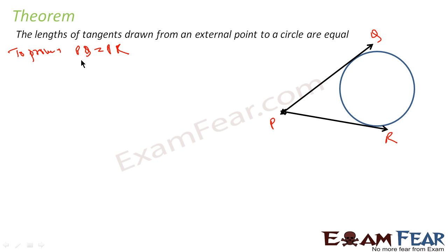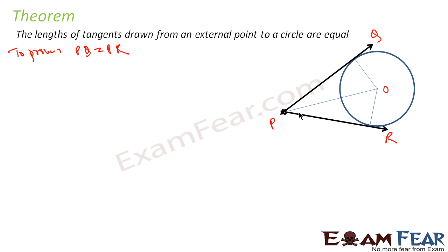How to prove this? Let's draw the radius — if we can draw some triangles, then we can prove either by similarity or by Pythagoras theorem. So let's draw these triangles here. This is my center O, and these are the radii. This is radius R and this is radius R. So I have to prove that PQ is equal to PR.